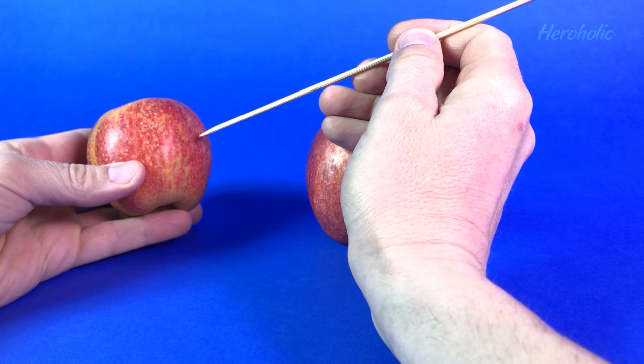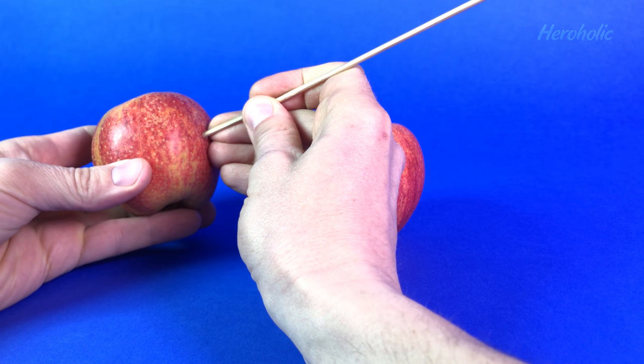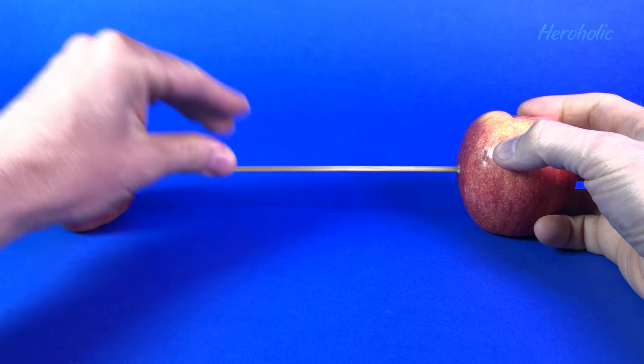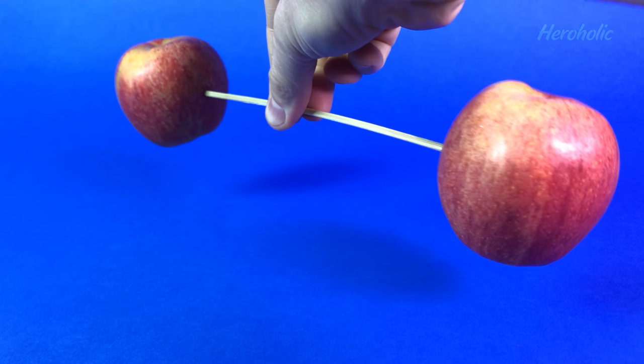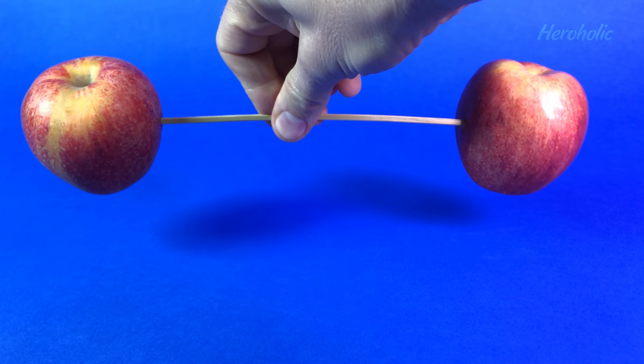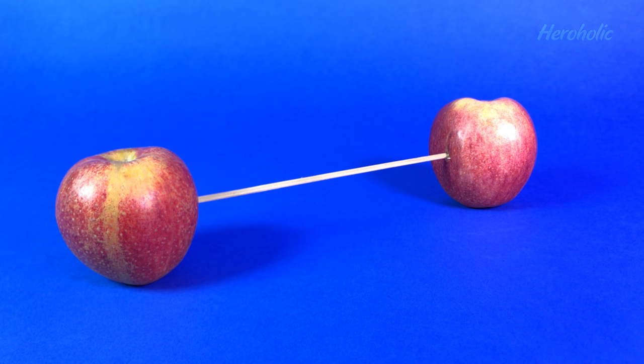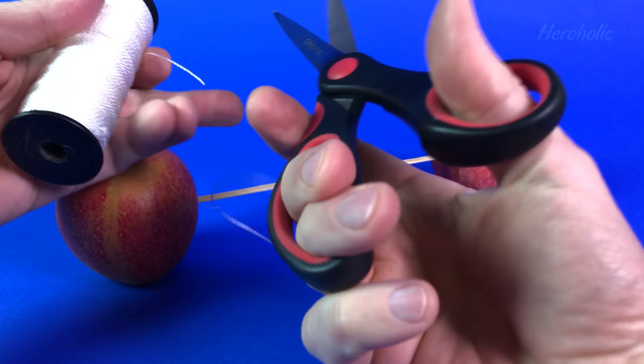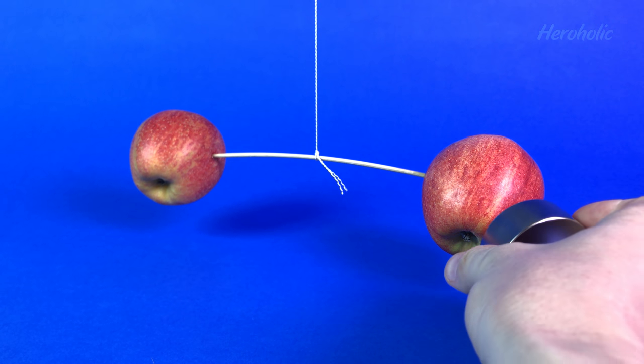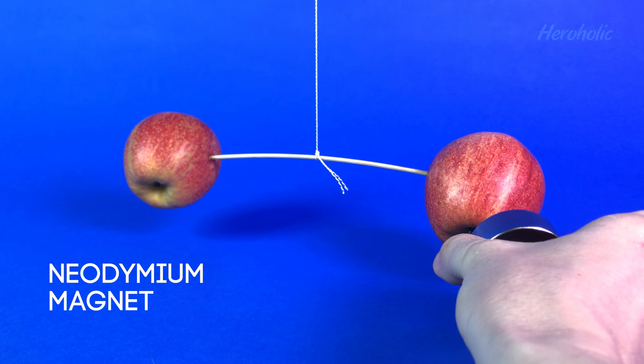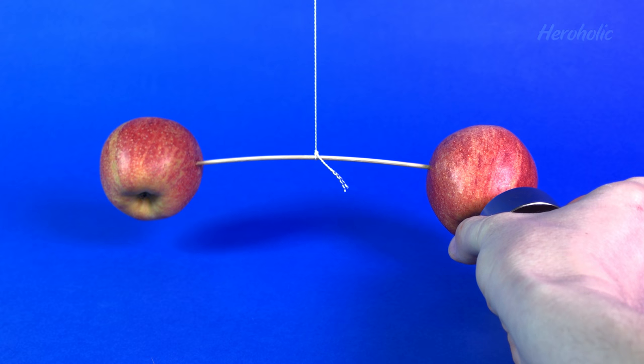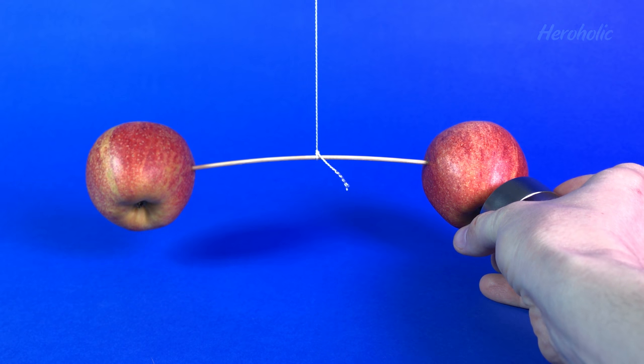Take two apples, put a stick through them. Then, suspend them on a string. Try to move them with a large neodymium magnet. They're moving, because apples contain iron.